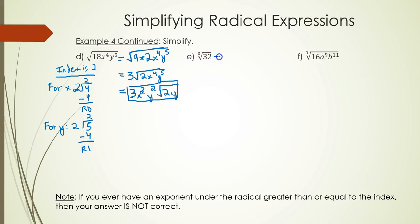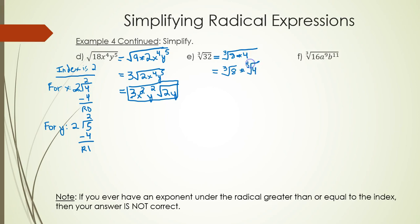Now cube root mode. 32 is not a perfect cube, but it is divisible by a perfect cube. It's not divisible by 27, but it is divisible by 8. 32 is 8 times 4. So you have the cube root of 8 times the cube root of 4. The cube root of 8 is 2; the cube root of 4 you can't simplify. Remember, you're in cube root mode, not square root mode.